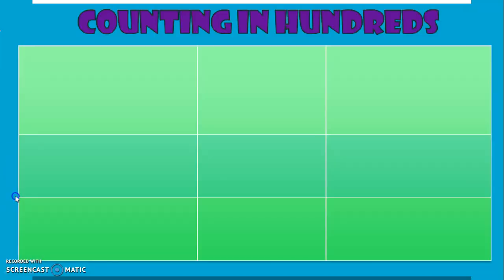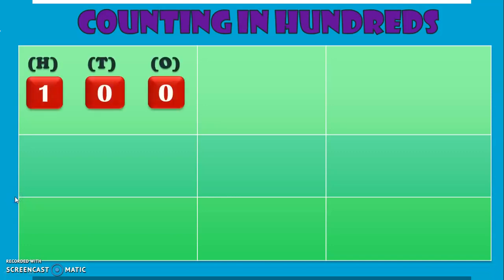Let us begin by counting in hundreds. How do you write the number 100? It is 1, 0, 0. Zero is in the ones place, another 0 in the tens place, and 1 in the hundreds place.